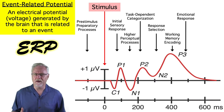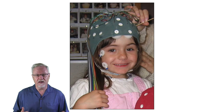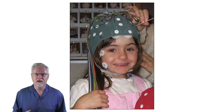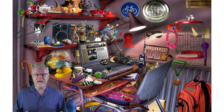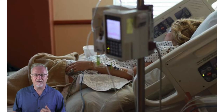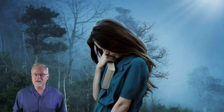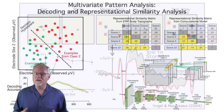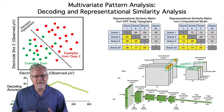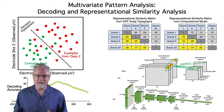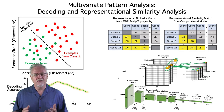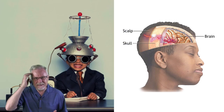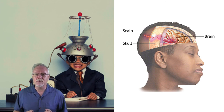So what can you do with ERPs? You could use them to study the development of face processing in infants and young children. You can use them to track the allocation of attention in complex scenes, predict which patients will wake from a coma, and see how anxiety and depression change perception, attention, and decision-making. You can use ERPs to understand the origins of individual differences in working memory capacity, and even decode the contents of working memory and link brain activity to computational models.